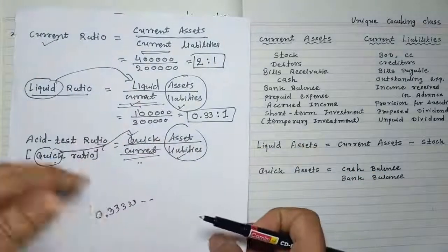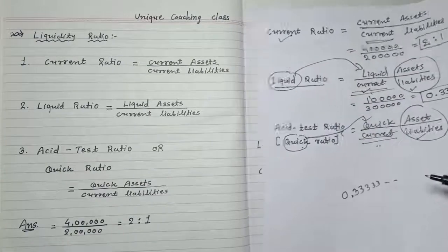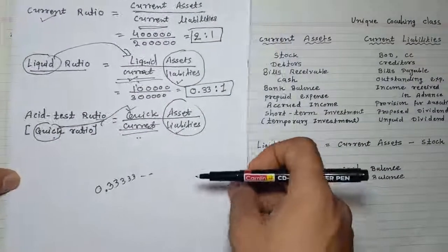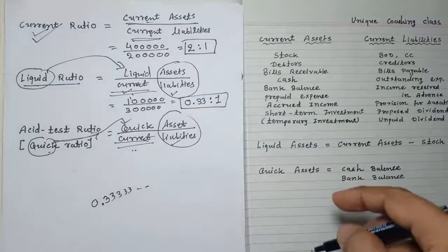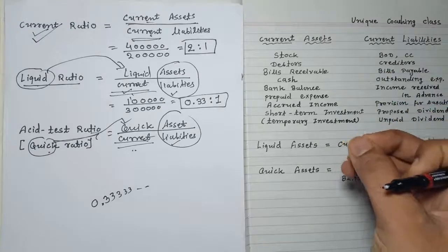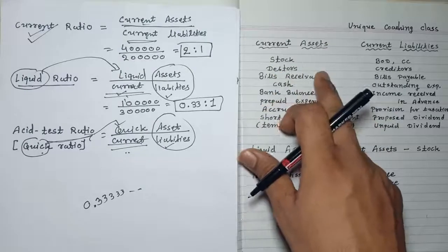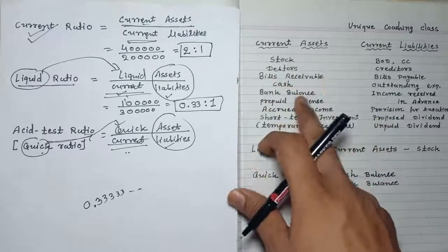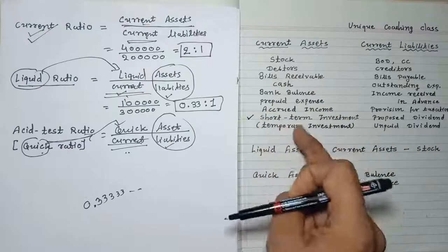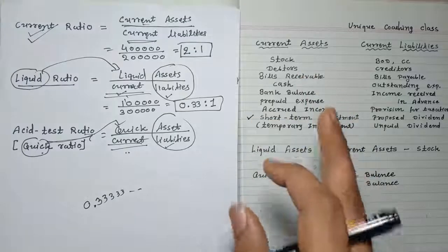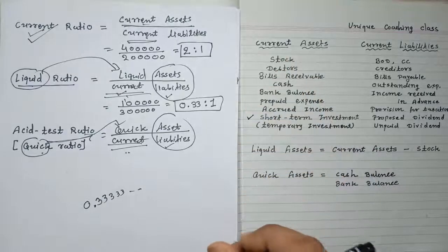Now, current assets include: stock, debtors, bills receivable, cash, bank balance, prepaid expenses, and accruing income. Also remember that short-term investment or temporary investment is also part of current assets — many students forget this.